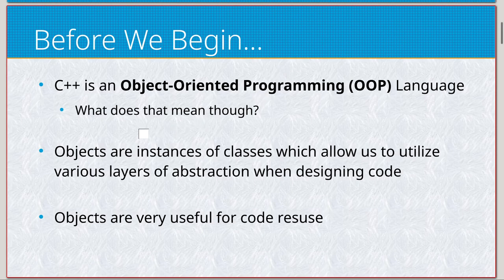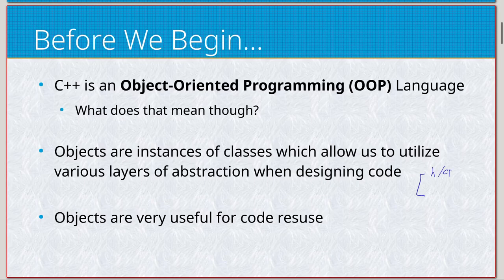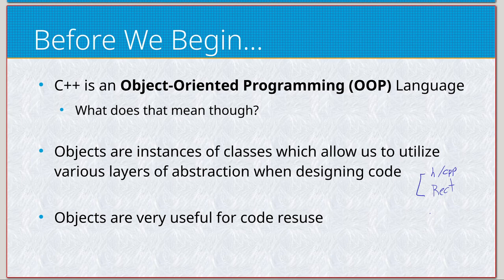If you've ever heard the adage of 'objects are instances of classes,' you'll hear that a thousand times — but what does that exactly mean? Let's say we have some class code, stored in the classic header and cpp file combination. The example I use is a rectangle, so it's going to be rect. These two files — the header file and the cpp file — construct my class, a rectangle.